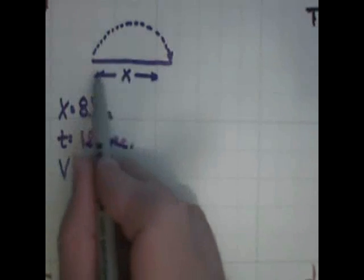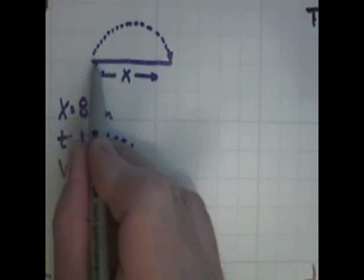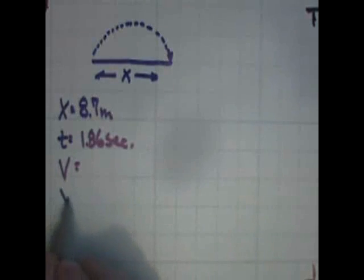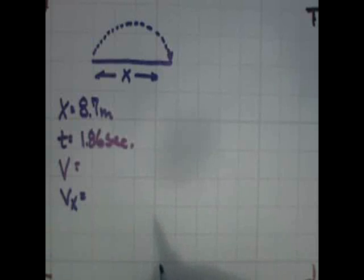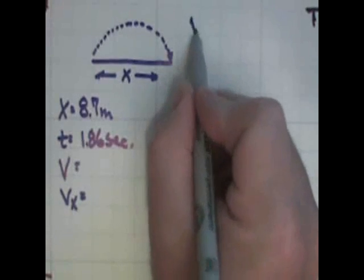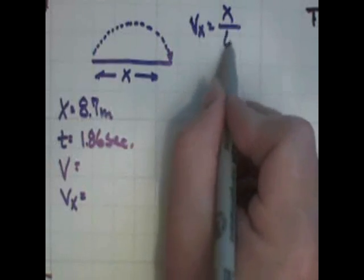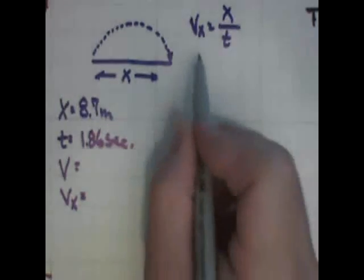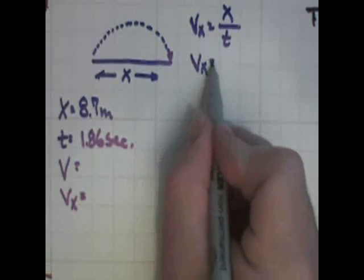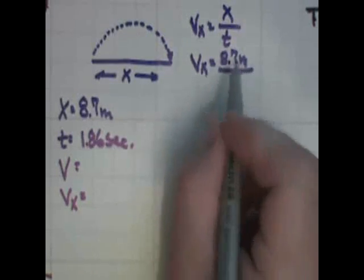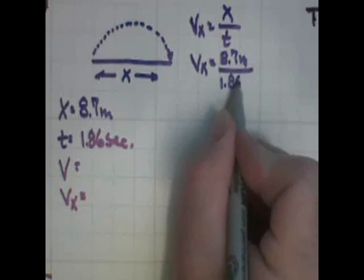Well, first of all, I know that it traveled in the x direction. So what was its x velocity? The velocity that carried it towards the hole. We call that velocity in the x-axis. And this velocity in the x-axis would be the x distance divided by the time in the air, total time in the air. So the velocity in the x-axis would be equal to 8.7 meters divided by 1.86 seconds.